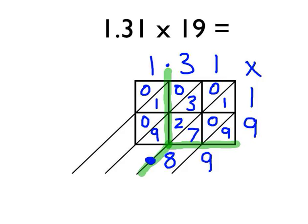Add the 9 is 14. So we write the 4, carry the 1. Total of that column is 1. Add the 1 we carried is 2. So, the answer to our question is 24.89.